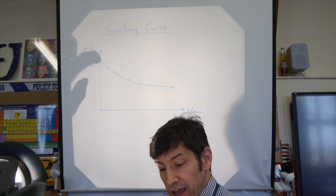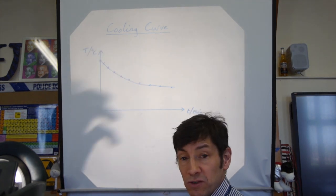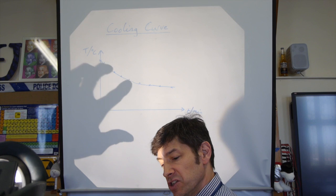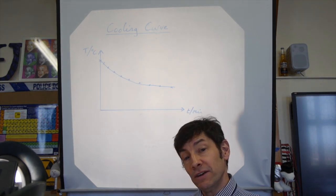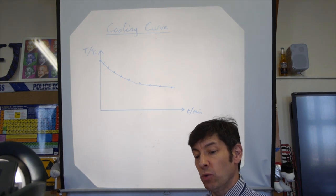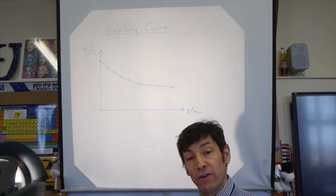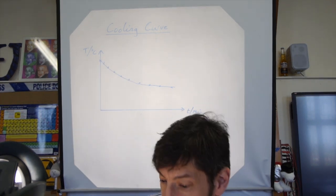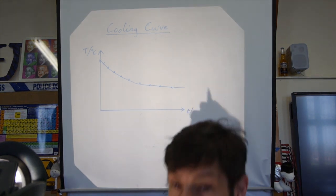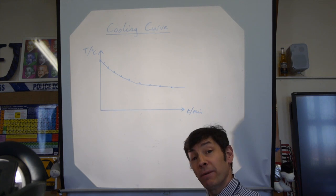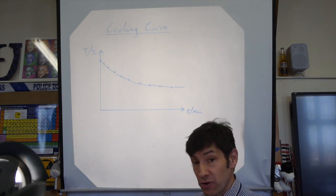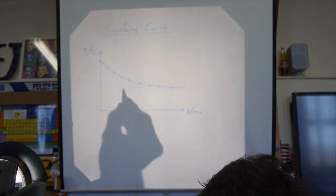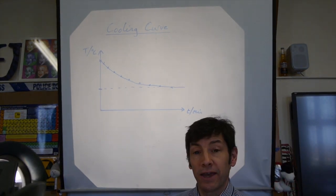As it cools down, it loses less heat per minute, so it doesn't cool as rapidly. It's not what you might expect — the temperature doesn't go down two degrees centigrade every two minutes. A hot drink is going to cool really quickly to begin with and then slow down, remaining tepid. So the final question is: what would happen if we ran this experiment for much longer than 22 minutes? This graph would finally level out — can you think about where it would level out?